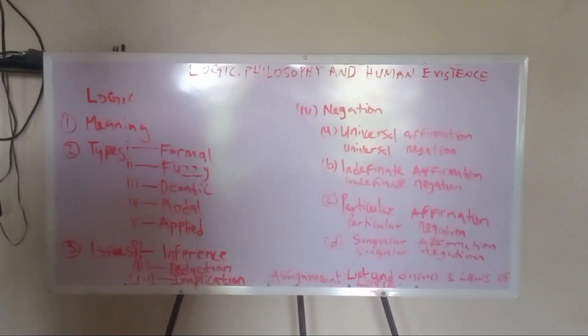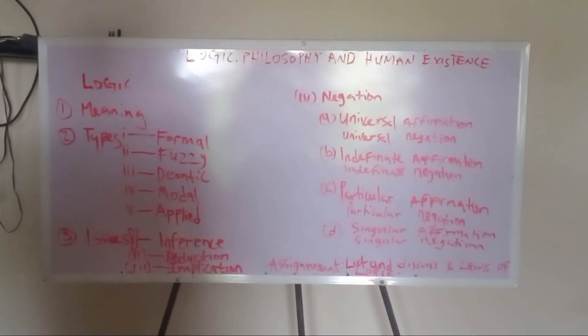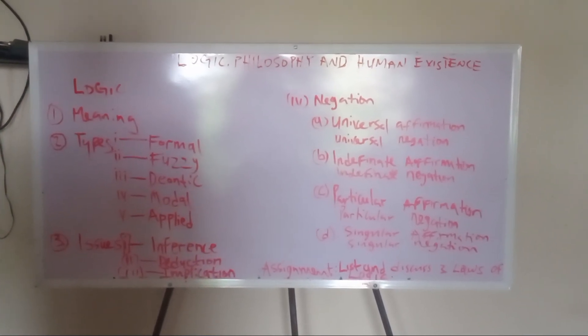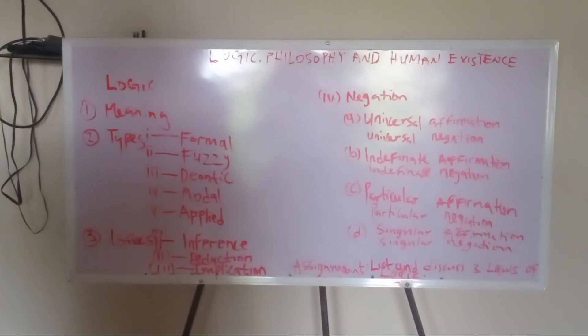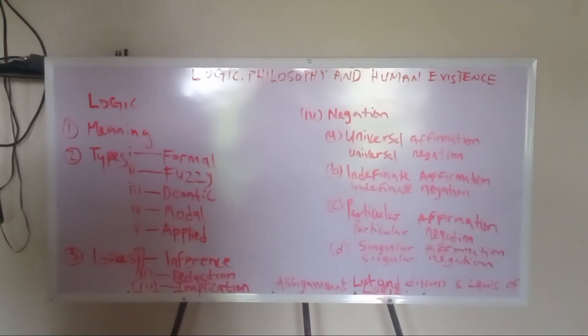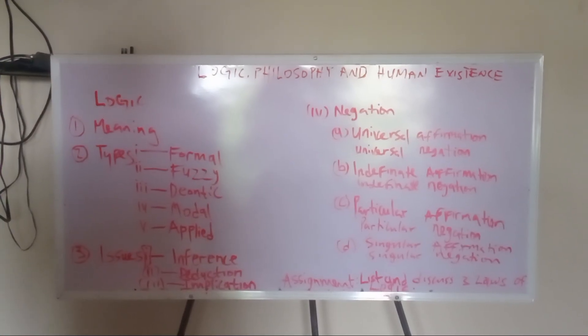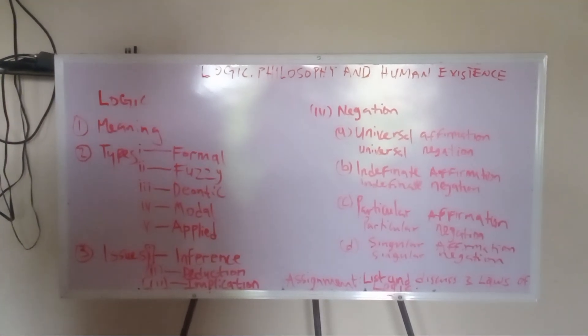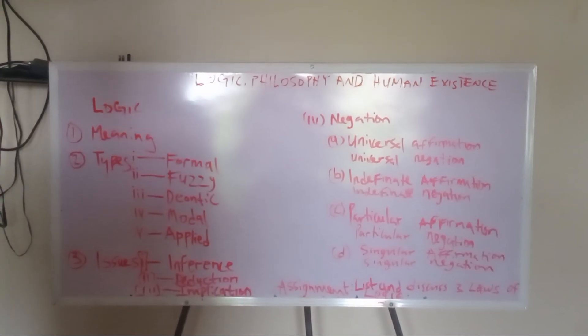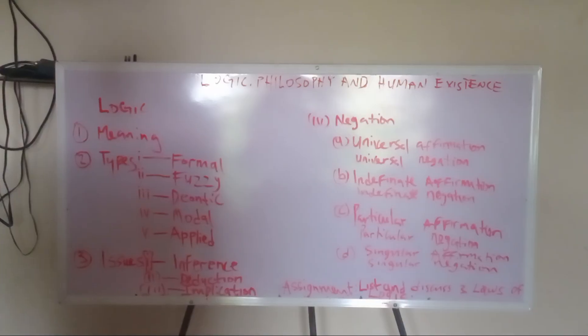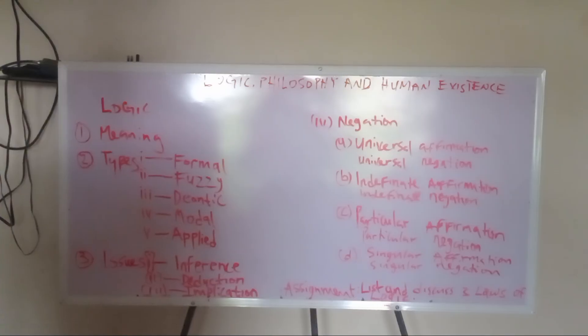Another example: every political party member is lover of money. Some government members are lovers of money. Then, you can now conclude by saying that some political party members are members of government. You can see the formality. We draw formality from the first premise through deduction.